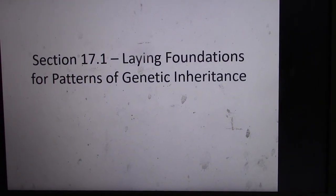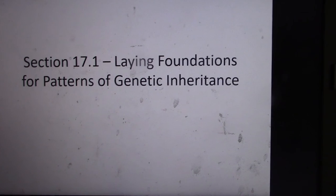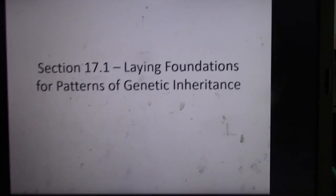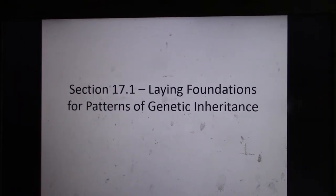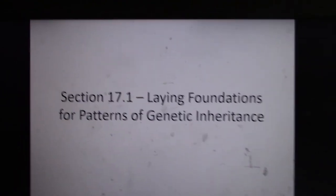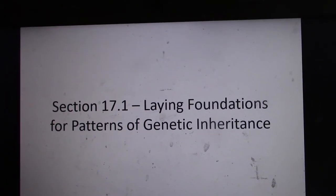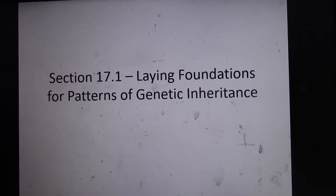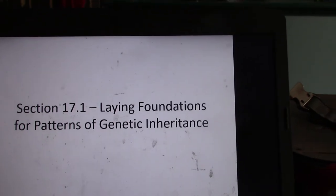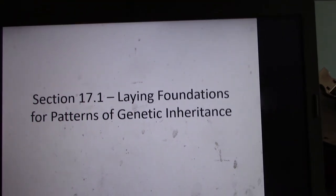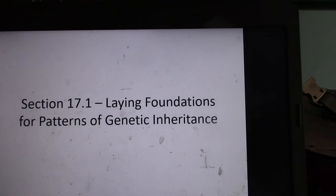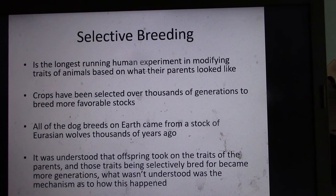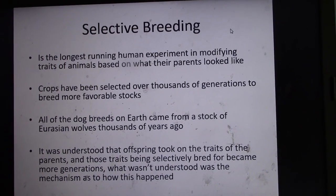Hi Bio 30. I am going to start my first lecture on Mendelian genetics today. I'm going to talk about primarily monohybrid crosses today — Punnett squares and probability that addresses just one genetic trait, not two. I'll do dihybrid crosses in a different lecture.